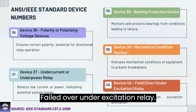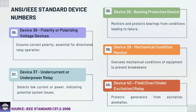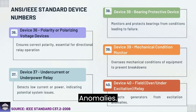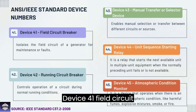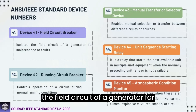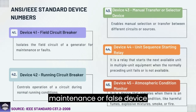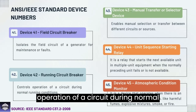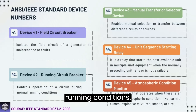Device 40: Field over or under excitation relay — protects generators from excitation anomalies. Device 41: Field circuit breaker — isolates the field circuit of a generator for maintenance or faults. Device 42: Running circuit breaker — controls operation of a circuit during normal running conditions.